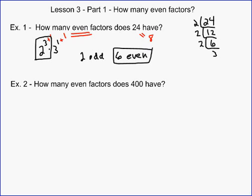So your procedure for doing this, of finding the number of even factors, is actually first to find the number of odd factors. So if we look at 400, we do our prime factorization of 400.